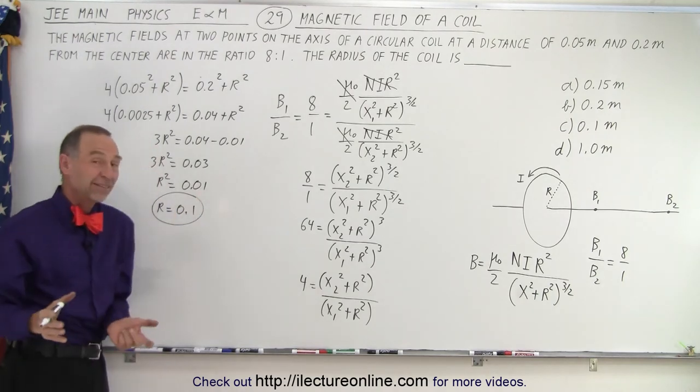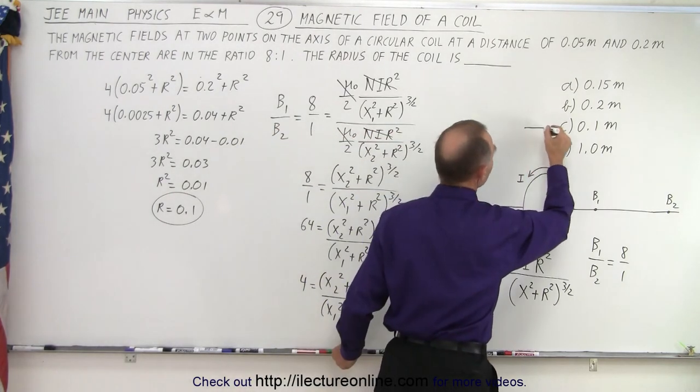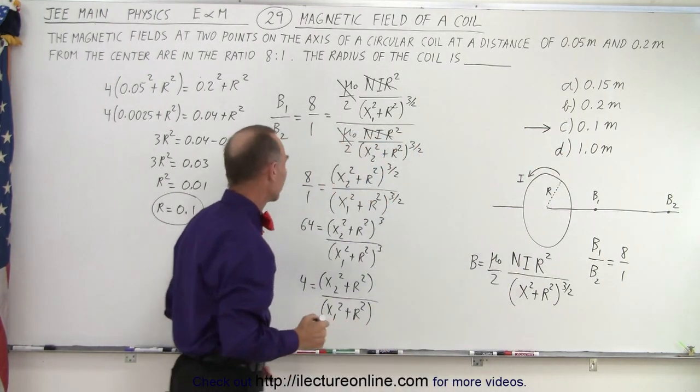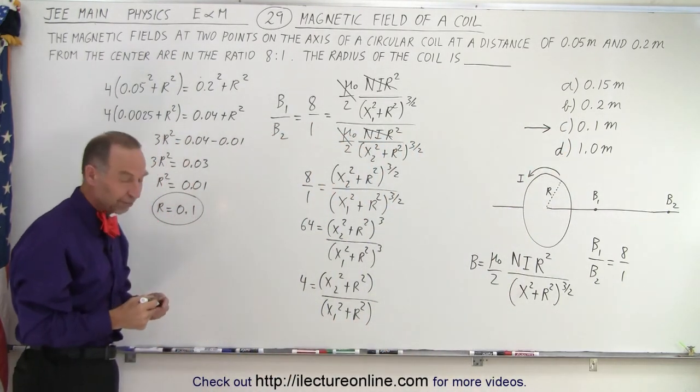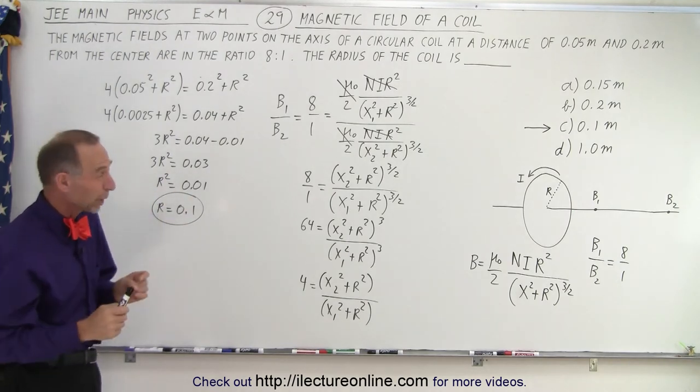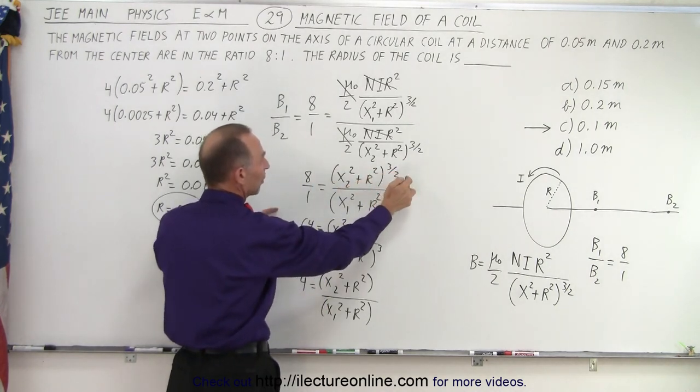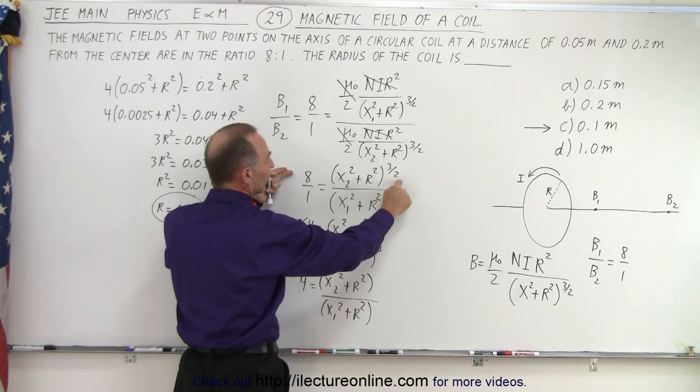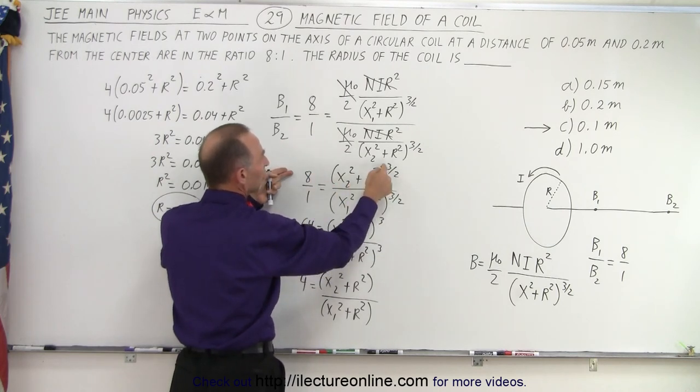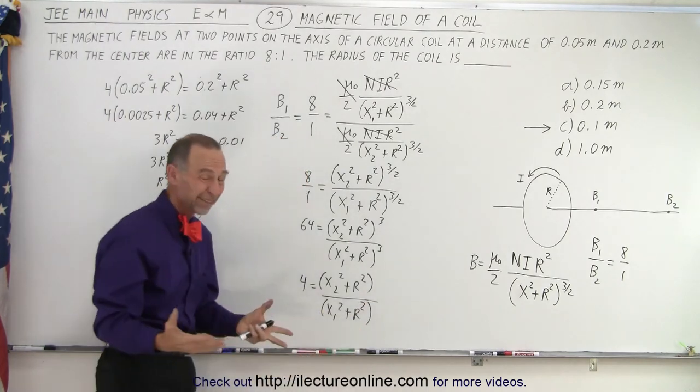Okay and of course that's standard unit meters and it looks like c is the answer. Now notice I did do a lot of writing on the board, you can probably do this a little bit quicker. We have 8 and this to the 3 halves power, so when you square both sides you get rid of this that gives us 64. Take the cube root of 64 it gives us 4 so you could potentially do that all in one step.